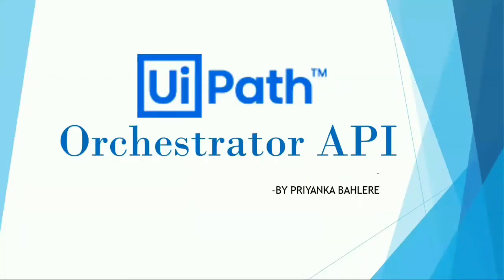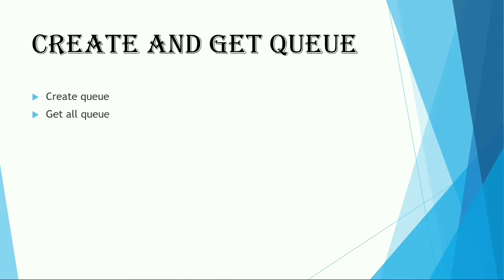Hello and welcome to the series of UiPath Orchestrator API. In the last video, we have seen how we can create assets in Orchestrator and also how we can get all the assets available under Orchestrator. In this video, we're going to see how we can create a queue in our Orchestrator and how we can get all the queues available under our Orchestrator without using any interface, just by using its API.